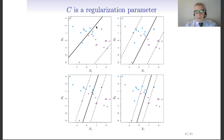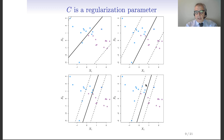You can see what happens as C varies: with the maximum C, all points are inside the margin. As C decreases, the margin shrinks, the direction of the hyperplane changes, and the number of violations decreases. With a quite small C, you have far fewer violations than in the earlier examples.